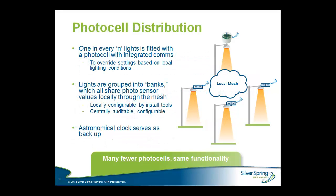One interesting innovation is the notion of photocell distribution. Silver Spring's network is a mesh network where all nodes in a region communicate with each other. We extended this by allowing the ambient lighting condition sensed by one photocell to be communicated to all its neighbors. You can create a bank or group of streetlights assigned to a given photocell, allowing the photocell sensor values to be communicated to all lights within that bank — enabling a single photocell to turn lights on and off based on ambient conditions for an entire neighborhood.